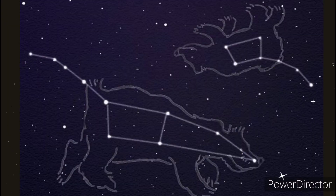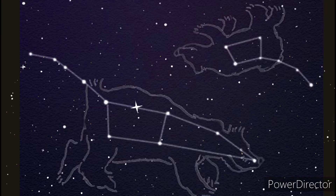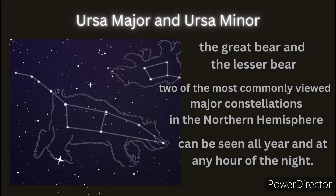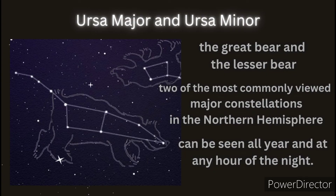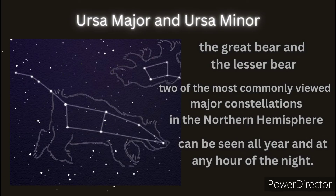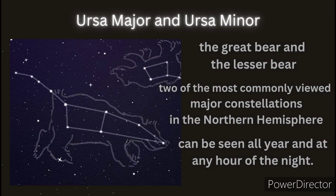These are also known as the Great Bear and the Lesser Bear — Ursa Major and Ursa Minor. They are two of the most commonly viewed major constellations in the northern hemisphere and can be seen all year at any hour of the night. Ursa Major is the third largest constellation in the sky and the largest in the northern hemisphere. Ursa Minor's most important star is Polaris, also known as the North Star, which has been used by sailors for navigating at sea.